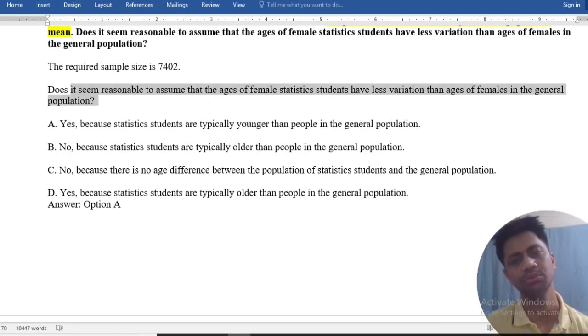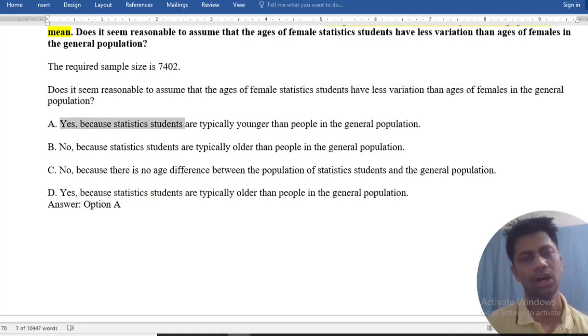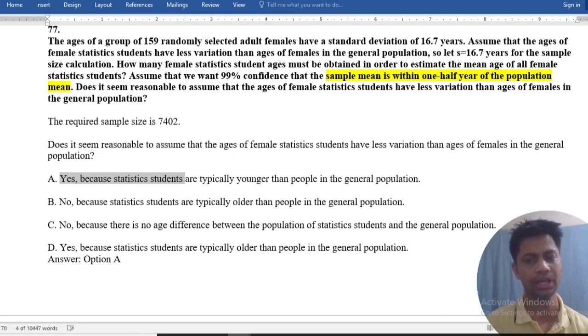Does it seem reasonable to assume that the age of female statistics students have less variation than females in the general population? Option A: Yes, because statistics students are typically younger people, younger than people in the general population.